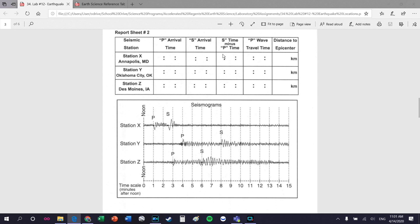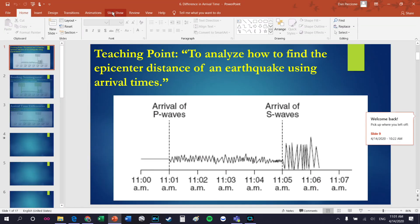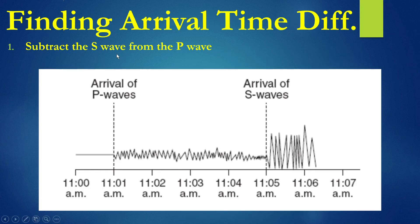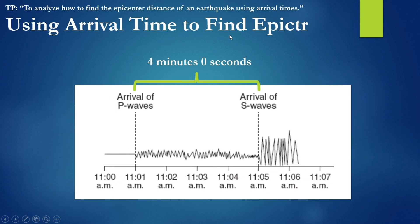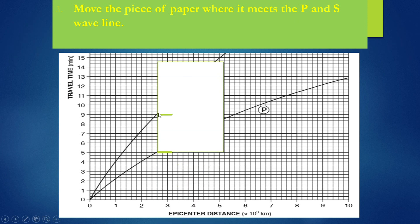For the P wave travel time and epicenter distance, you have to use the difference in arrival time to find the epicenter distance. Going back to lesson 6 - once you have the difference in arrival times, you subtract them. In this lab the difference is 1 minute 30 seconds. You mark off that difference on a piece of paper, then bring the piece of paper up where the two tick marks meet the P and S wave lines.